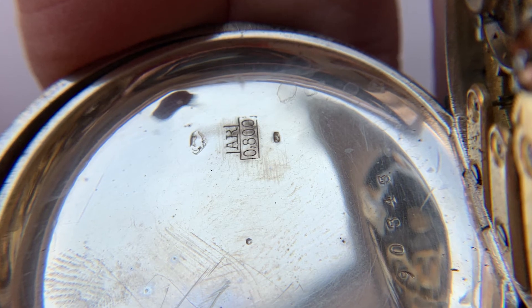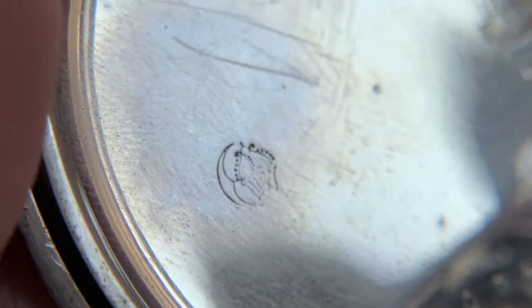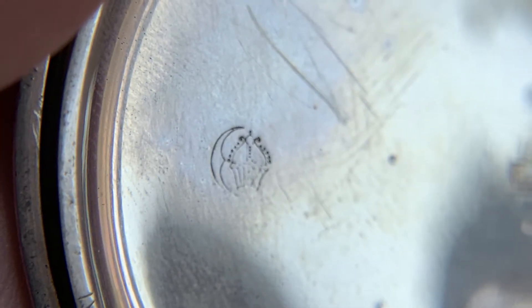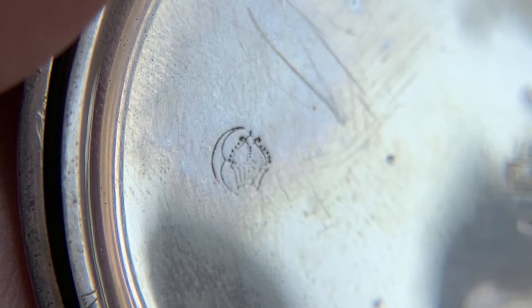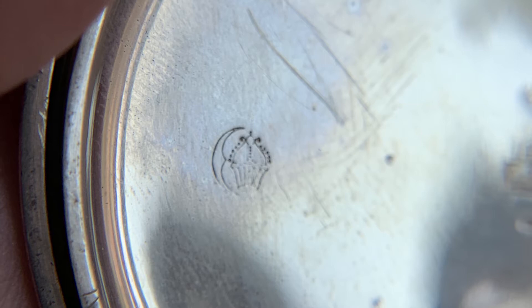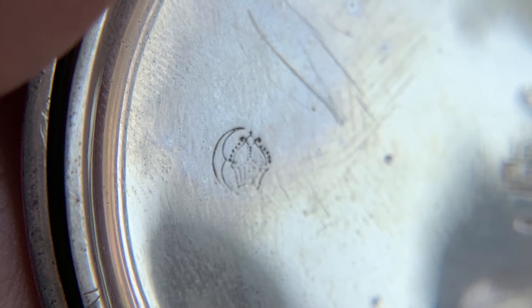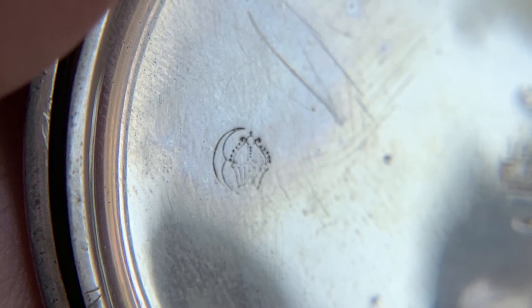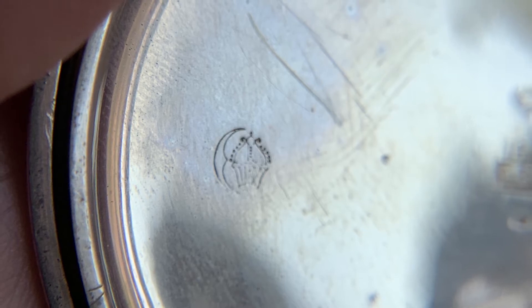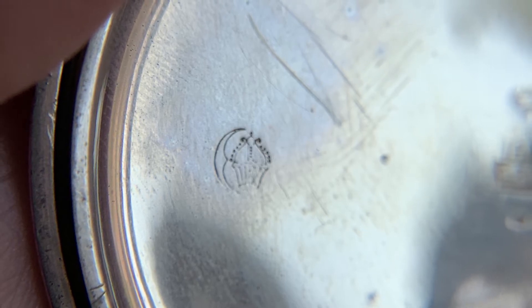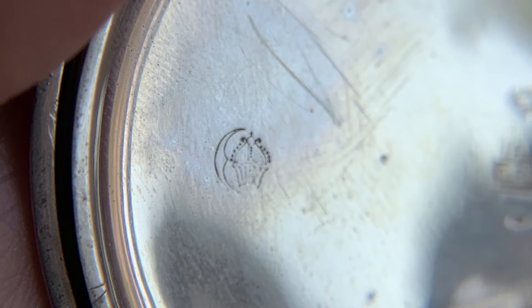It also has a crescent and crown hallmark, which is a German hallmark for silver. For some reason, in Switzerland, they also stamped them with German hallmarks. This probably was never in Germany, although I suspect maybe that was so that they would be all set in case they wanted to export it to Germany.